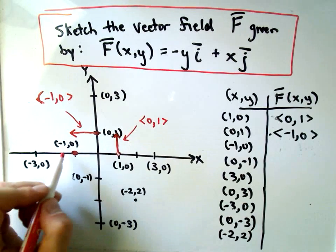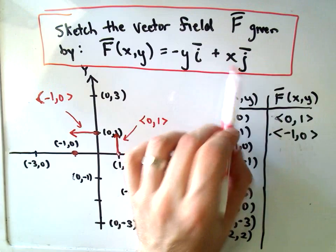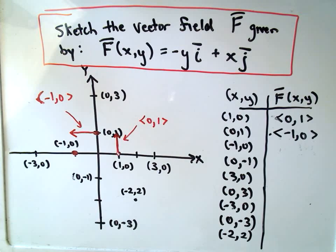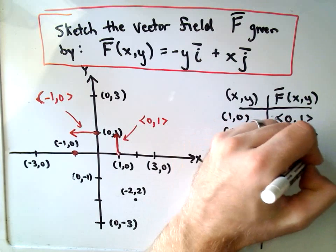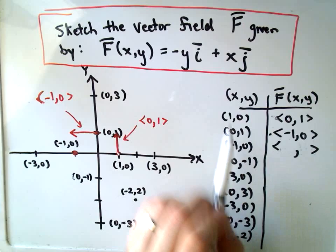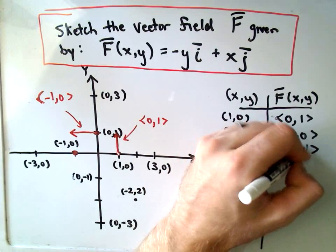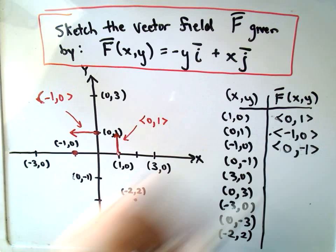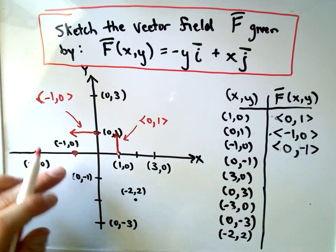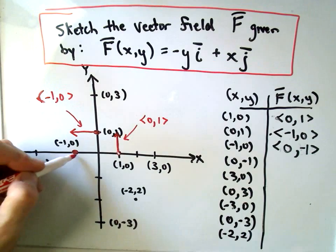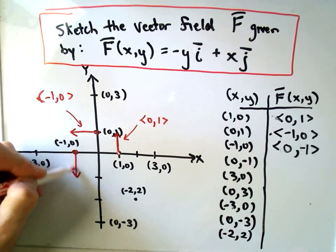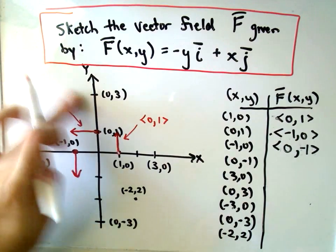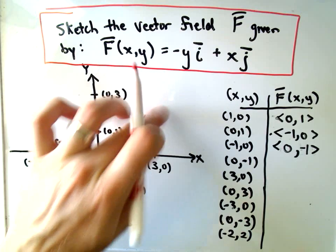At (-1,0), notice if you plug that in. If we plug negative one in for the x coordinate, we'll get negative one j. If we plug zero in for the y coordinate, we'll get zero i. And notice this is just going to be a vector pointing one unit down.